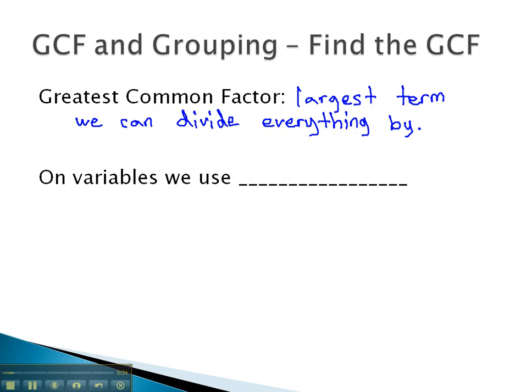Often we can do a number using mental math, but on variables it will be important that we use the lowest exponent on any common factors.